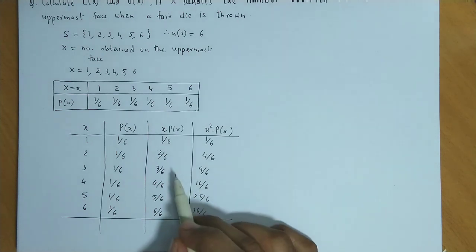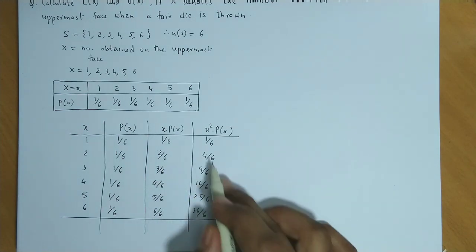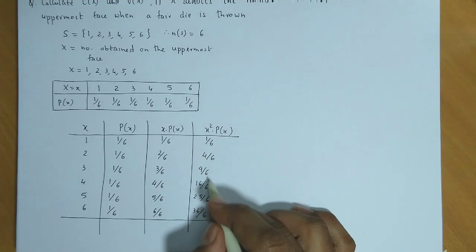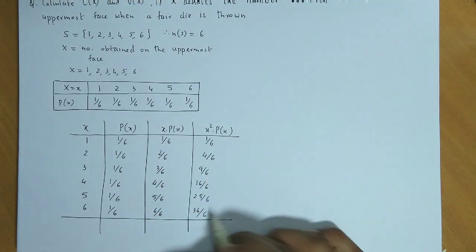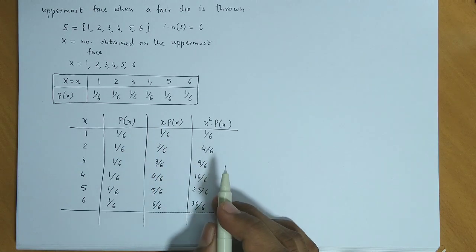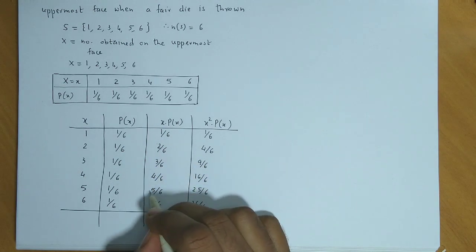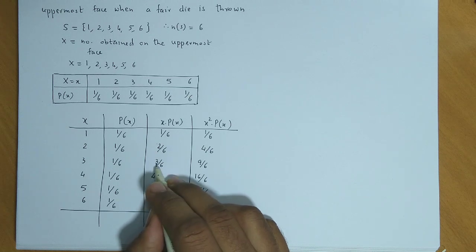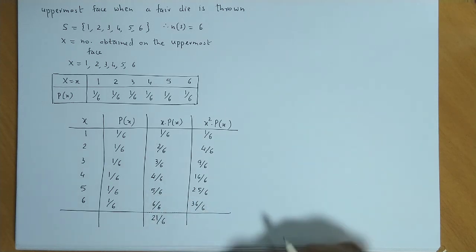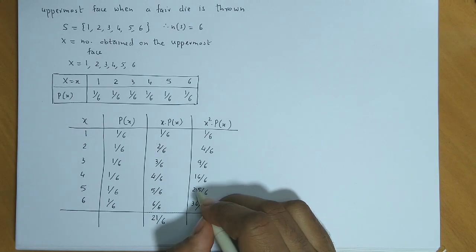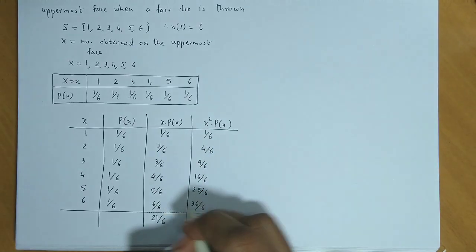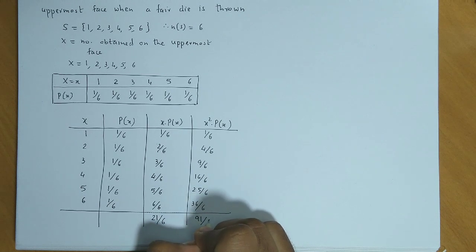We have not reduced any of the fractions, because all denominators are 6, which makes it easy to add the columns. The total of the x·P(x) column is 21/6, and the total of the x²·P(x) column is 91/6.